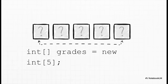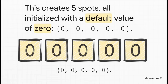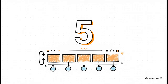What if you know you're going to need, say, five boxes for something, but you don't actually know what you're going to put in them yet? No problem. This line of code creates an integer array called 'grades' and just reserves five empty spots, all ready for you to fill up later. For number-based arrays, the computer fills them all with a default value of zero — like having five clean slates ready for data. And here's a super useful trick: if you forget how many boxes your array has, you can just ask it. Using grades.length will tell you the size; in this case, it would return five. This is huge, and you're about to see exactly why.